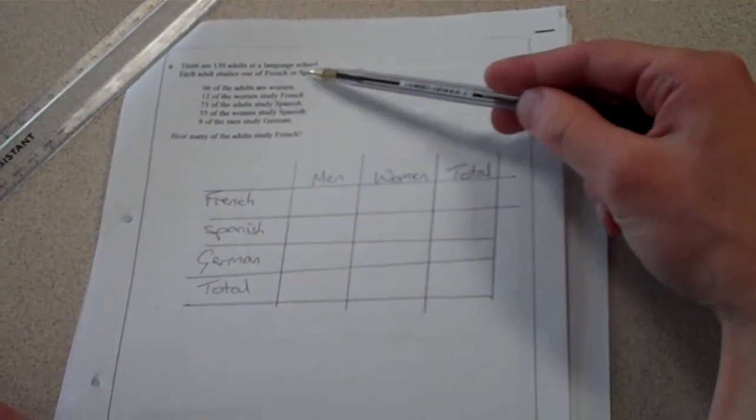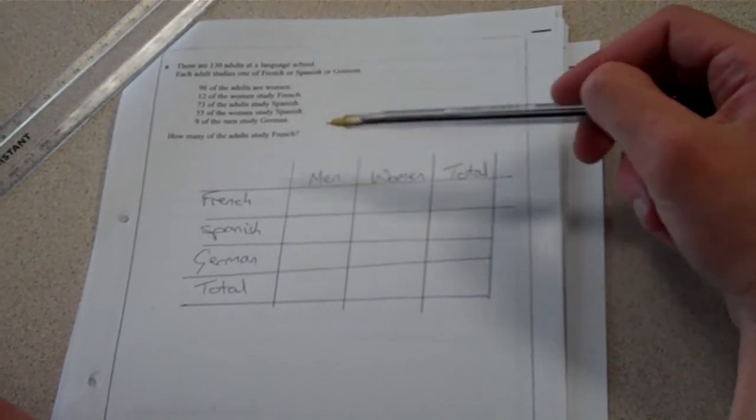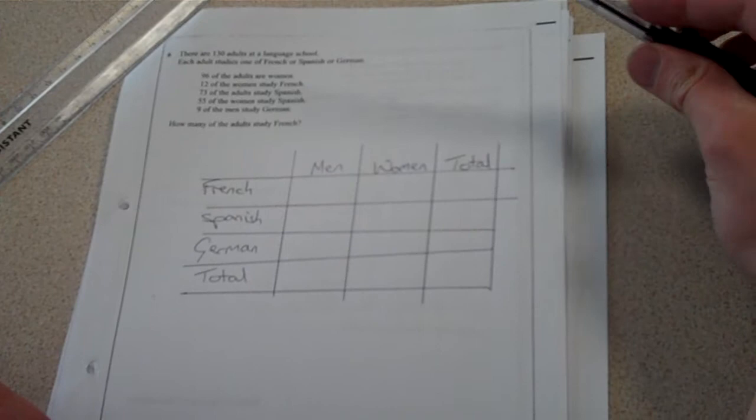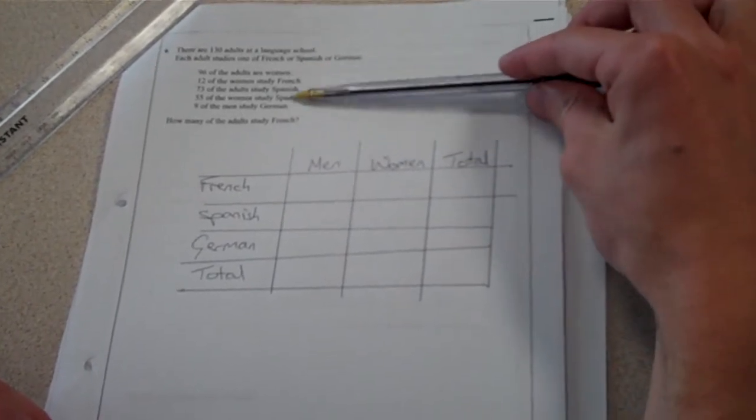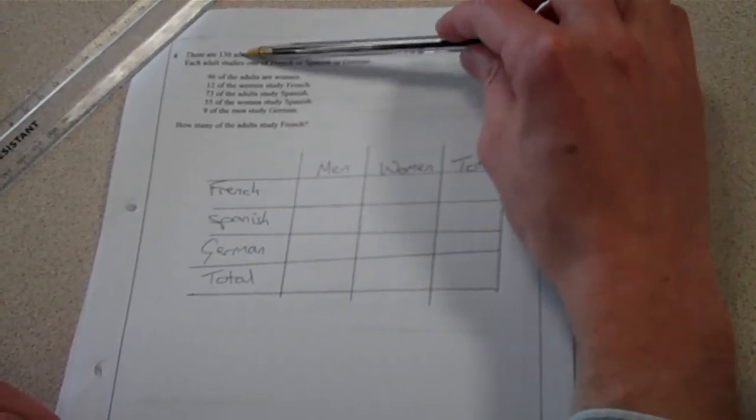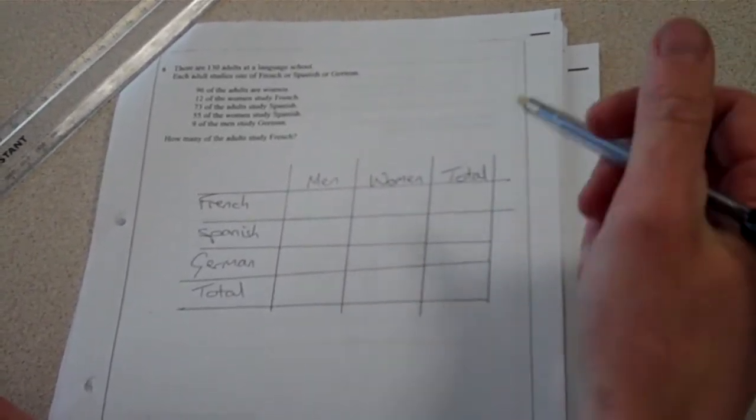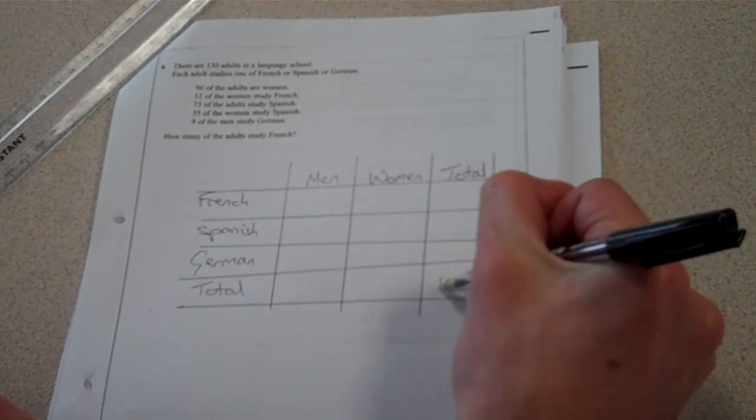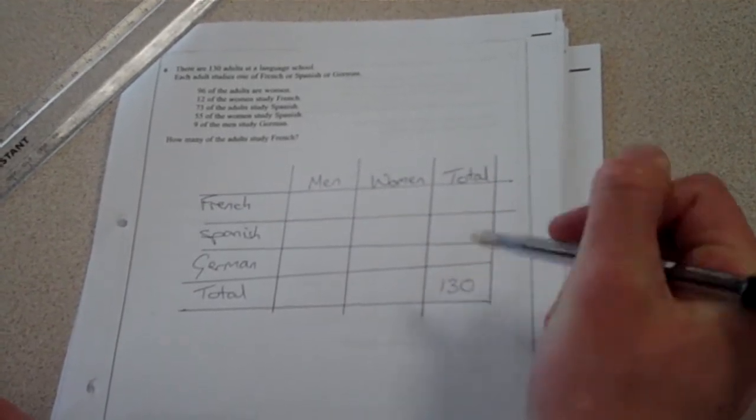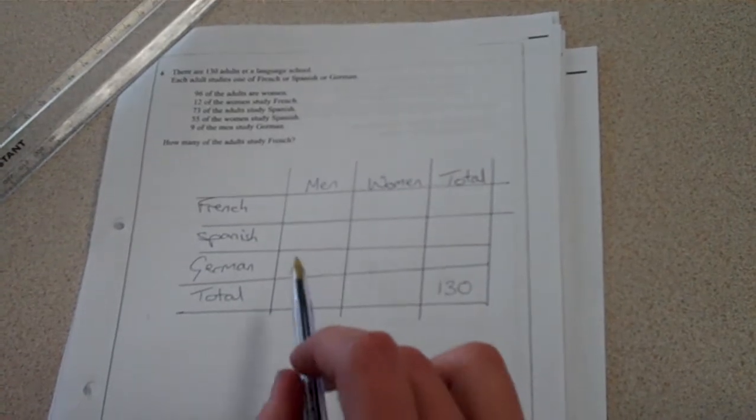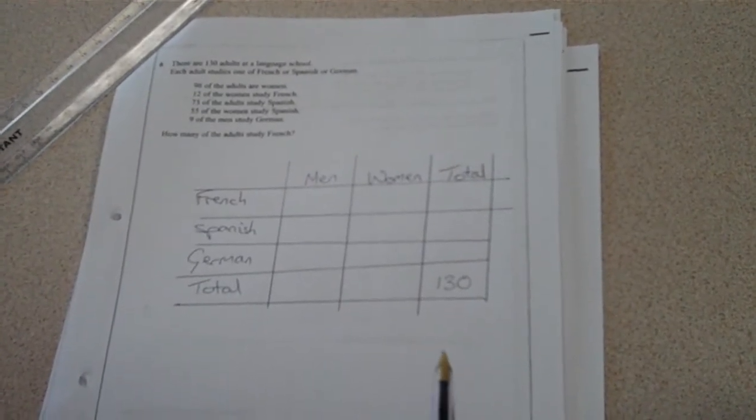Right. So first of all, every single bit of information in this question I need to transfer into this table. It starts off, and some people may miss this, they'll just concentrate on this data here. It starts off, right at the start, how many adults you've got. So 130 people in total. So my total number of people is going to be 130. At the moment, I don't know my split between males and females, or men and women. But hopefully that shall come out as I work through.